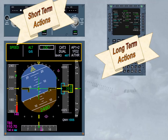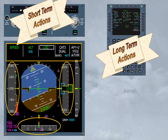The guidance mode, engagement, and arm status, and their associated guidance targets are provided on the FMA and PFD scales — speed, heading, altitude. When managed by the FMGS, the targets and modes are displayed on the FMA as the flight progresses.